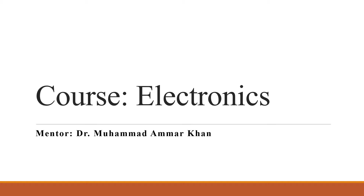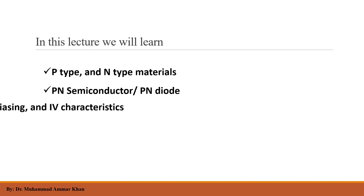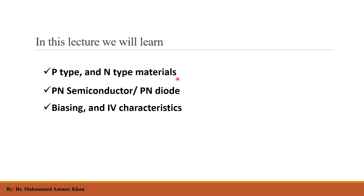Hi students of electronics, this is your mentor Ammar. Today we will talk about P-type and N-type material, P-N semiconductor or P-N diode — sometimes called P-N junction diode. Then we will cover biasing and I-V characteristics. I-V means current-voltage characteristics of a semiconductor.